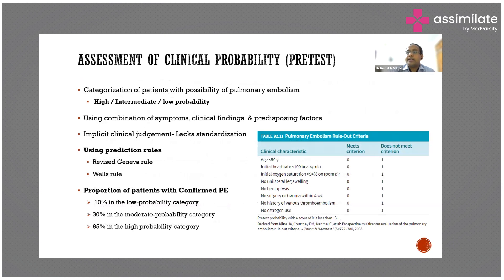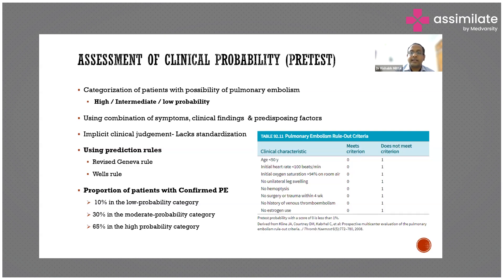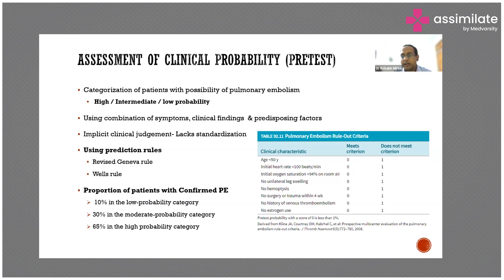Pre-test probability refers to the probability that a patient has pulmonary embolism before performing a confirmatory test such as CT angiogram or V/Q scan. Patients are classified into high, intermediate, or low probability based on a prediction score and D-dimer level. Clinical prediction rules were formed by combining symptoms, clinical findings, and risk factors to produce an objective score, removing subjective disagreement between clinicians.